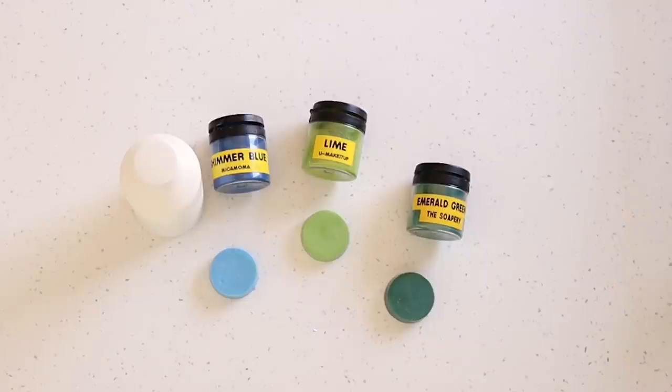So the next day to make the rest of my soap I'm just going to do a basic landscape scene around the dog. I want to have a sky blue that I make with a combination of shimmer blue from Micamama and some titanium dioxide—I mix that in equal one to one parts. Then for the grass I want it to have two different colors so I'm going to have some lime from You Make It Up and some emerald green from the soapery. I'm also going to be using some titanium dioxide on its own to put some clouds in the sky.